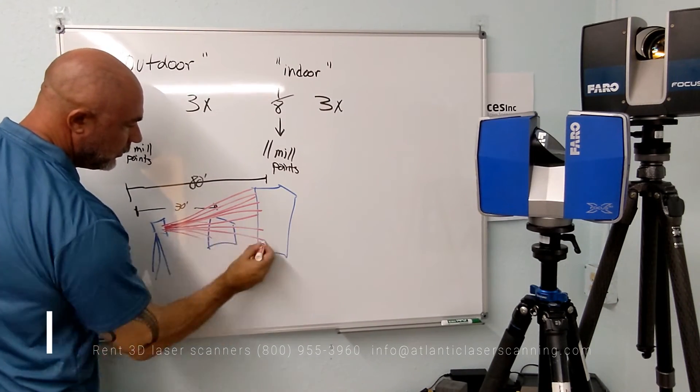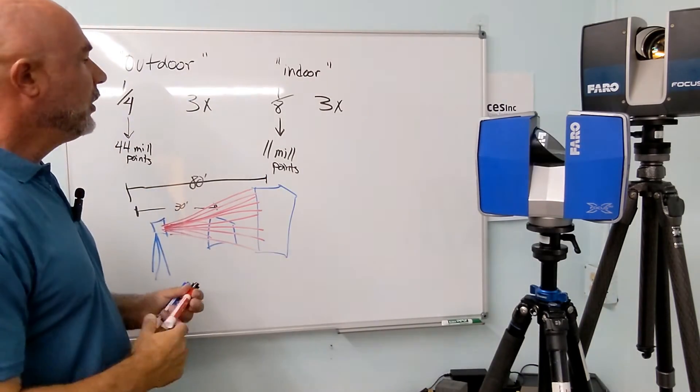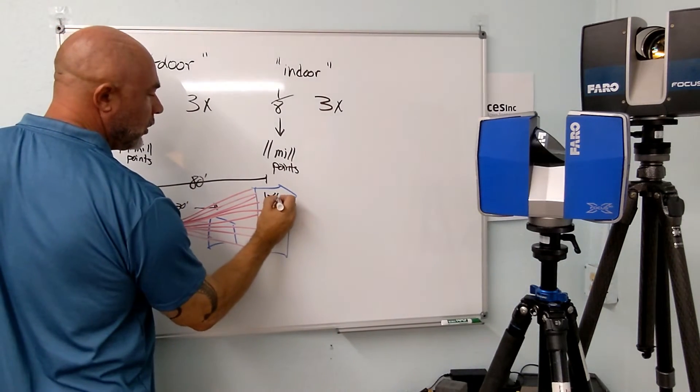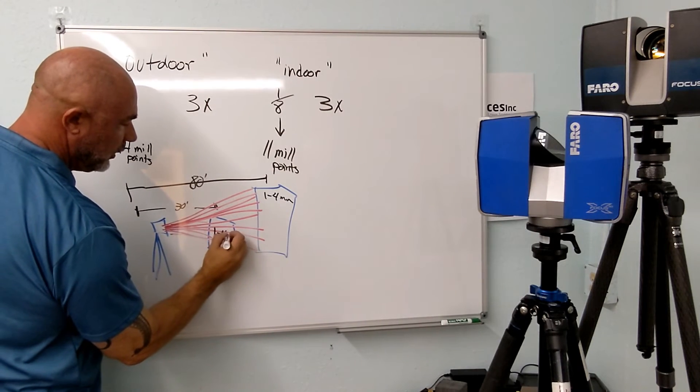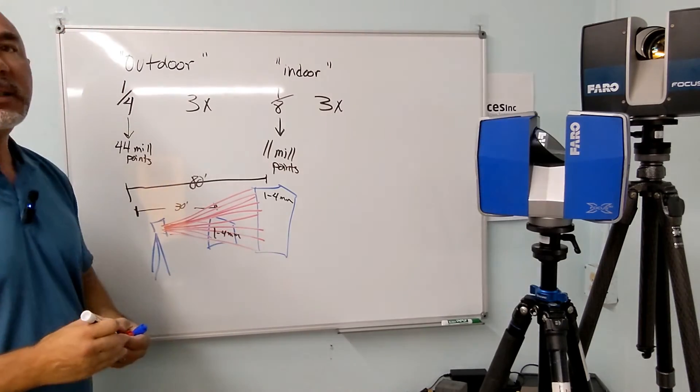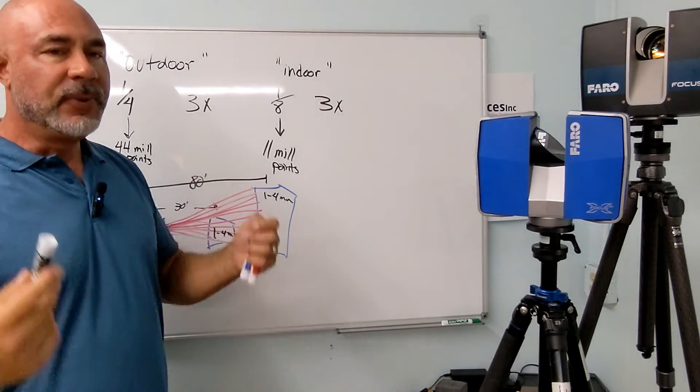So you're just firing more points that are staying close together, so at that 80 foot mark, you still have good data. You still have your 1 to 4 millimeter accuracy, and the close side here, you've got 1 to 4 millimeter. But once it gets beyond the 80 feet, adding more and more points becomes very difficult.